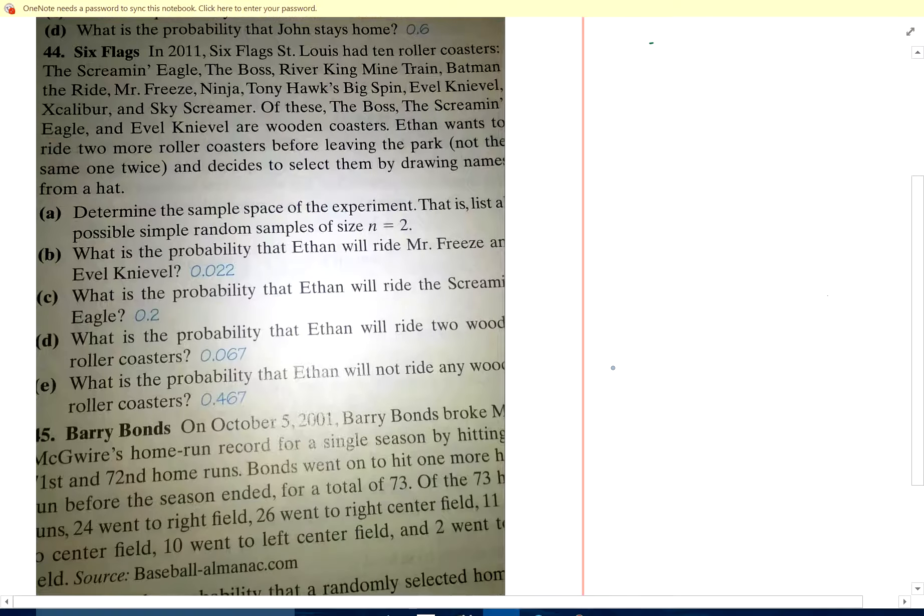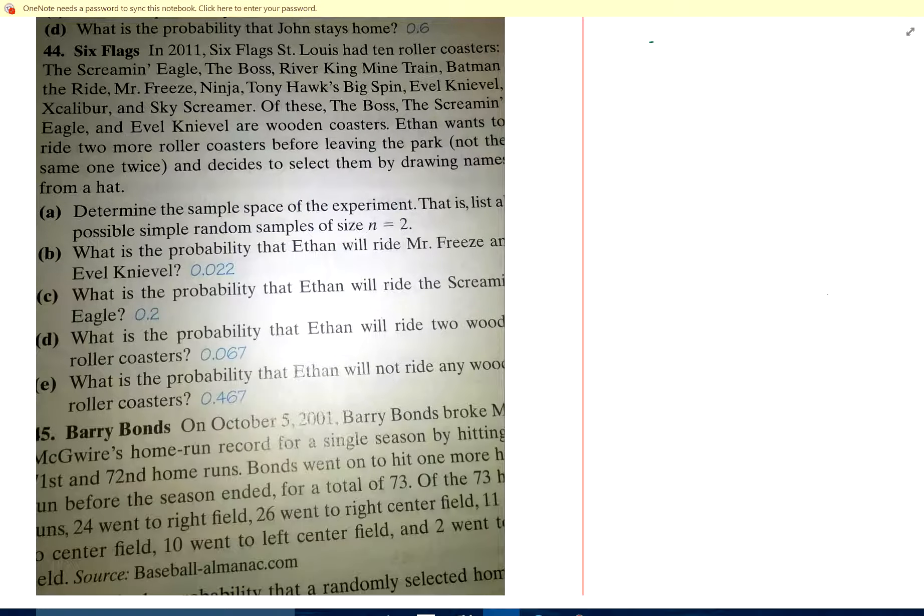Okay, here's a great problem. It's a pretty challenging problem too. Problem 44: Six Flags, ten roller coasters, and three of them - the Boss, the Screaming Eagle, and Evil Knievel - are wooden coasters. Ethan wants to ride two more roller coasters before leaving the park, not the same one twice. He decides to select them by drawing names from a hat. Determine the sample space.